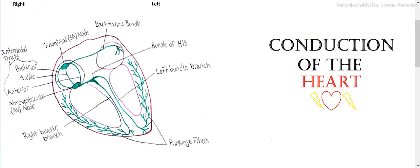After the SA node initiates this electrical signal, it travels through the Bachman's bundle here over to the left atrium. At the same time, it is traveling down these internodal tracks. There are three of them, the posterior, the middle, and the anterior.